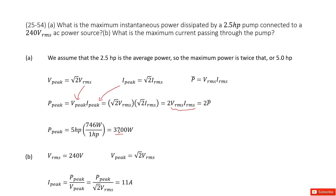Next, we need to find the maximum current passing through these devices. The maximum current is the current at the peak. We calculate it as the peak power divided by the peak voltage.